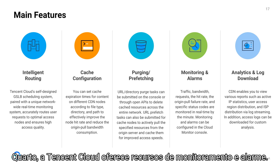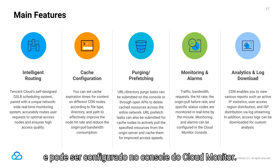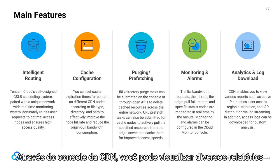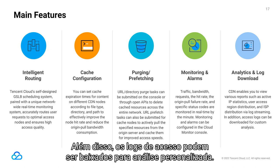URL and directory purge tasks can be submitted on the Tencent Cloud console or through open APIs to delete cached resources across the entire network. URL prefetch tasks can also be submitted for cache nodes to actively pull specified resources from the origin server. Fourth, Tencent Cloud offers monitoring and alarm capabilities — metrics such as traffic, bandwidth, requests, hit rate, origin-pull failure rate, and specific status codes are monitored in real-time. Finally, Tencent Cloud CDN also offers analytics and log download capabilities, including reports on active IP statistics, user access region distribution, and ISP distribution via log streaming.